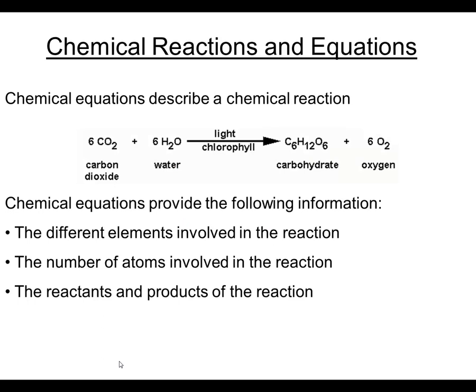When we look at a chemical reaction, it can be described by what we call a chemical equation. The chemical equation on the screen is one of the most important in all of biology. This is the chemical equation for photosynthesis. Looking at the equation, we can tell the different elements involved—there's going to be some carbon, oxygen, and hydrogen involved in the photosynthesis reaction.